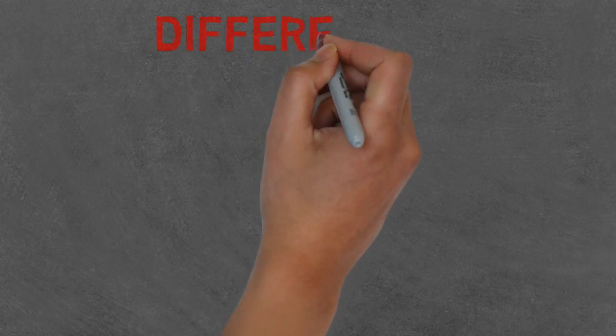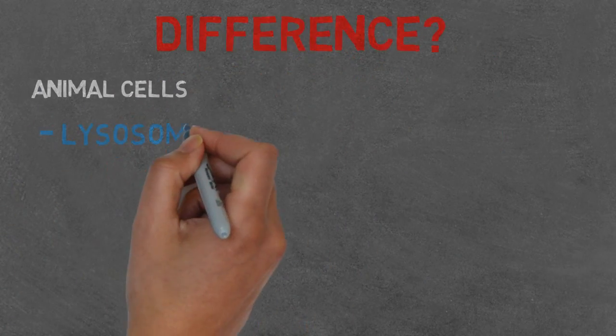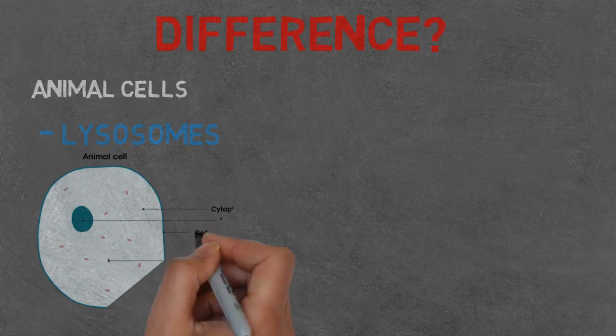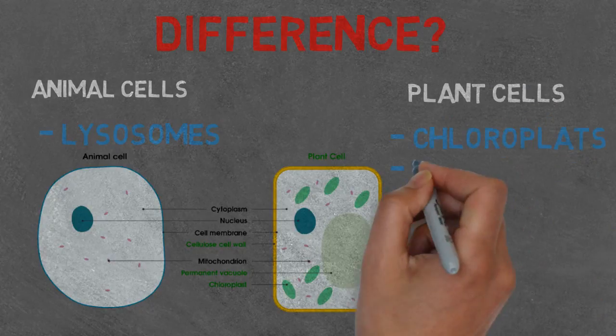So how do we tell the two apart? Animal cells have lysosomes, while plant cells have chloroplasts, a large central vacuole, and a cell wall.